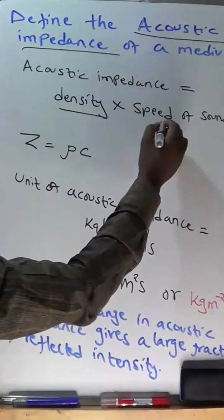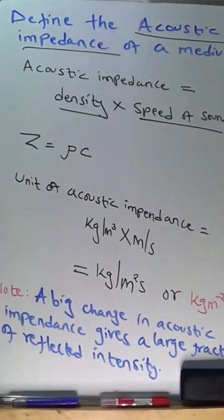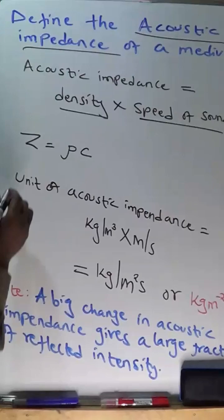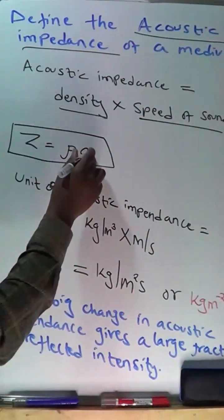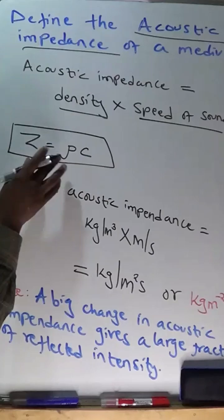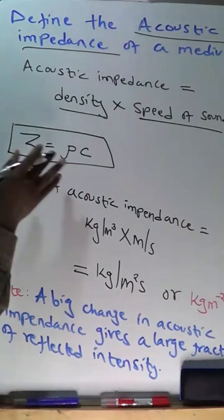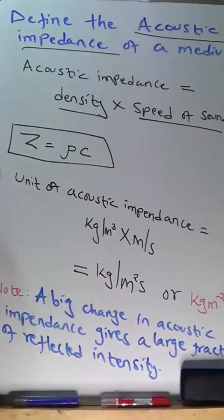Acoustic impedance equals the density times the speed of sound. Note it is always labeled as Z. Acoustic impedance equals density times the speed of sound.